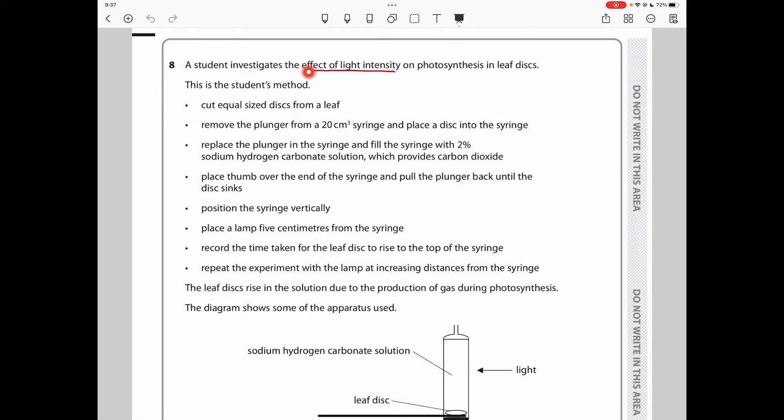Question 8. A student investigates the effect of light intensity on photosynthesis in leaf discs. This is the student's method: Cut equal-sized discs from a leaf, remove the plunger from a 20-centimeter cube syringe, and place a disc into the syringe.